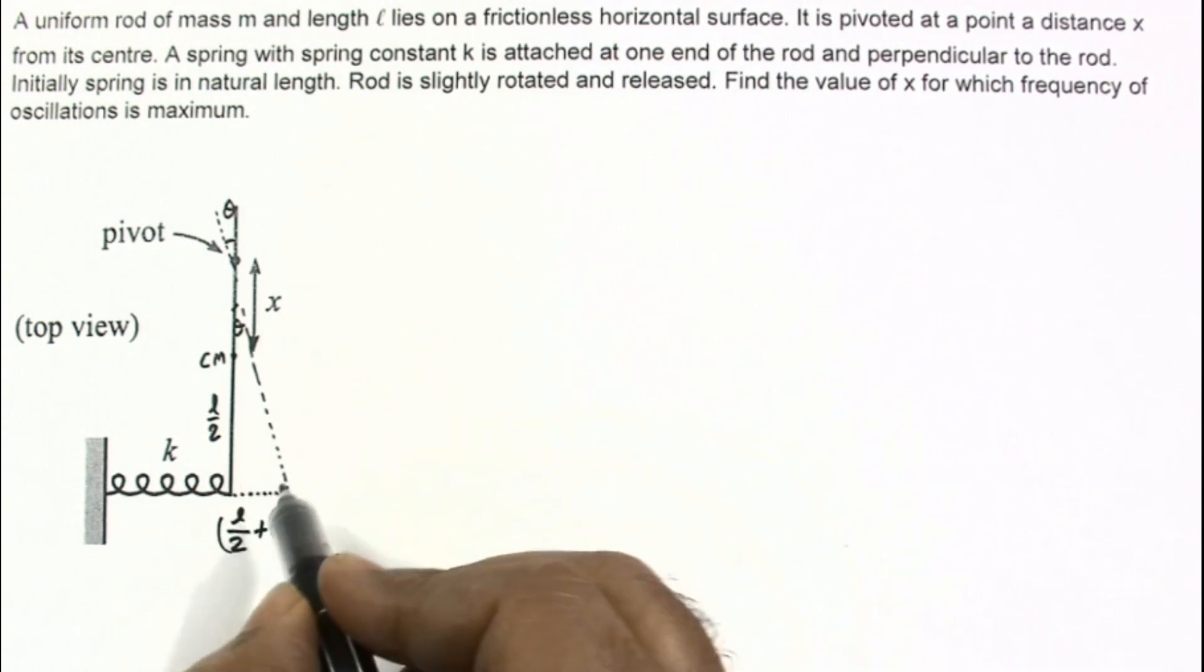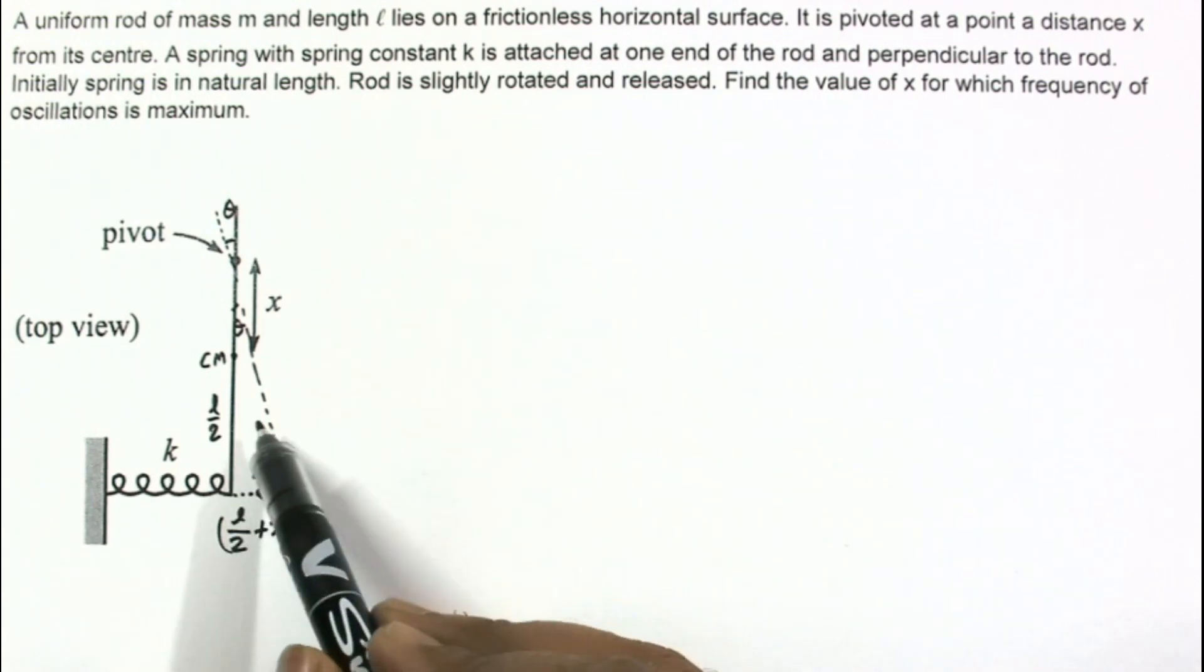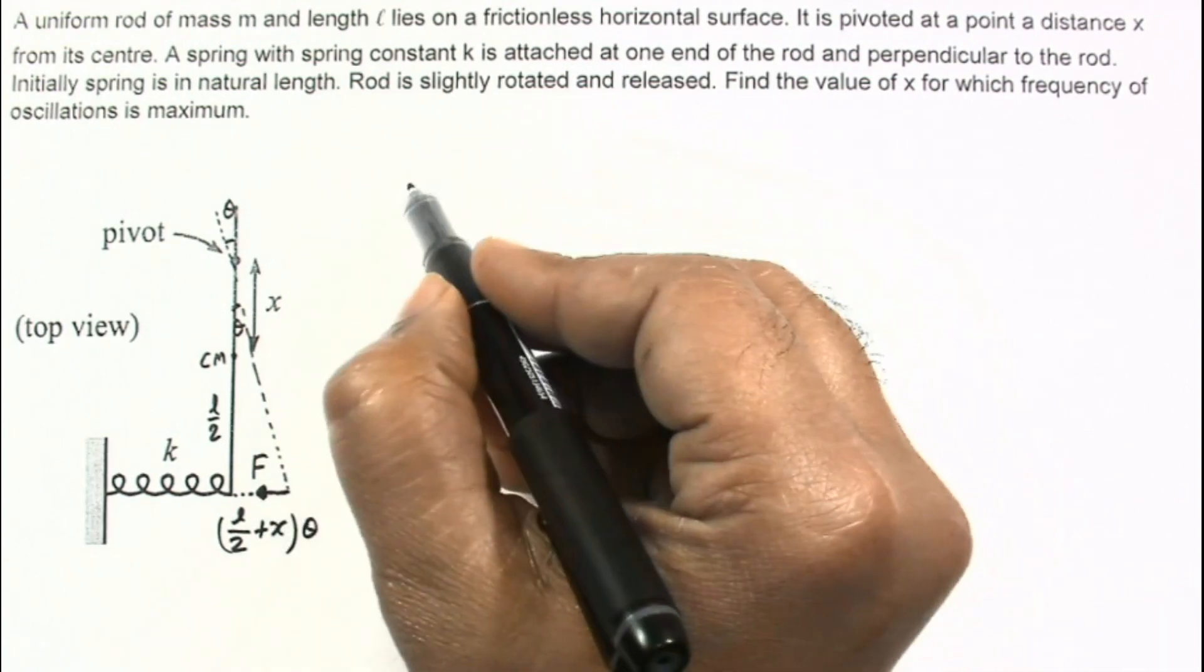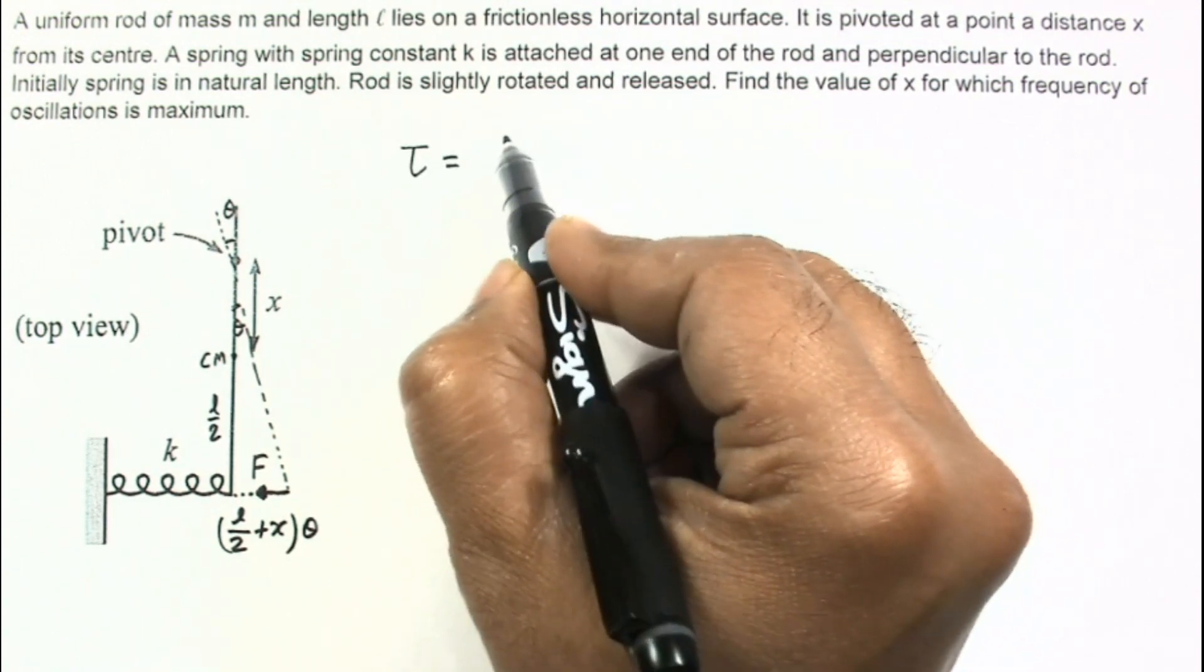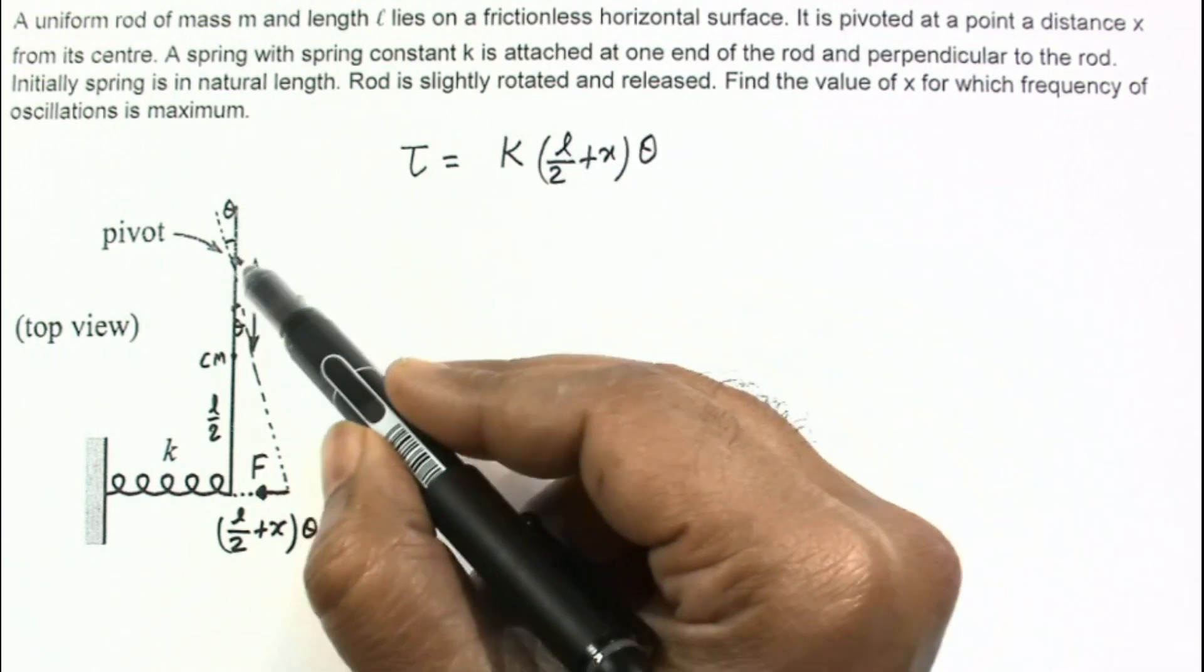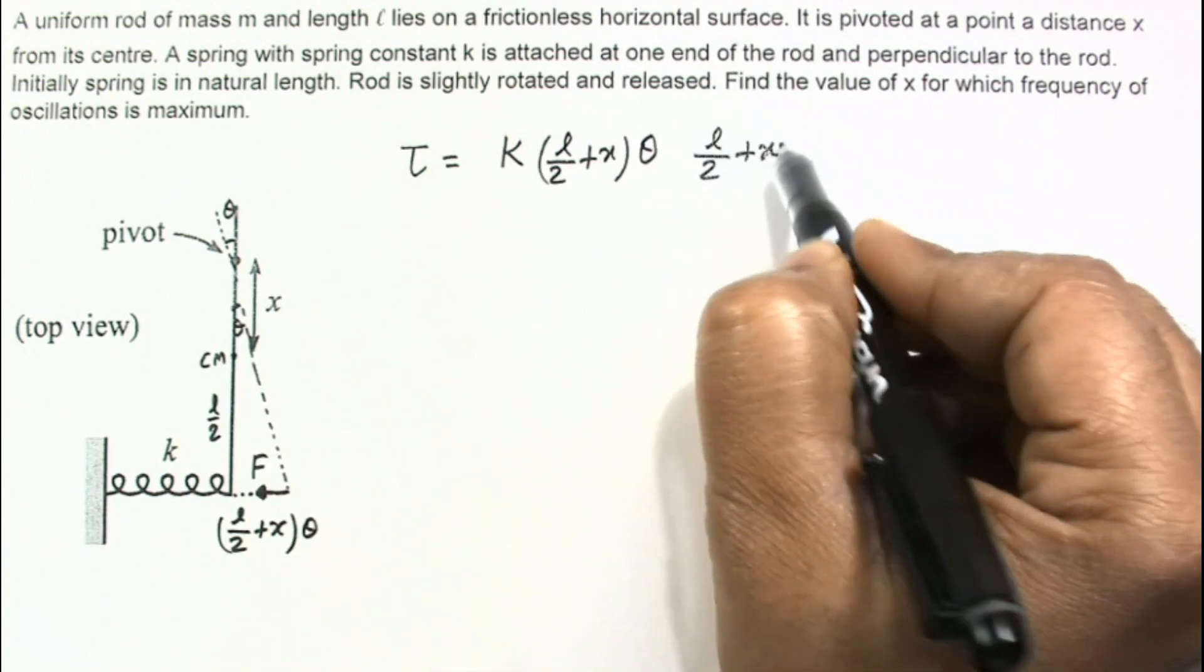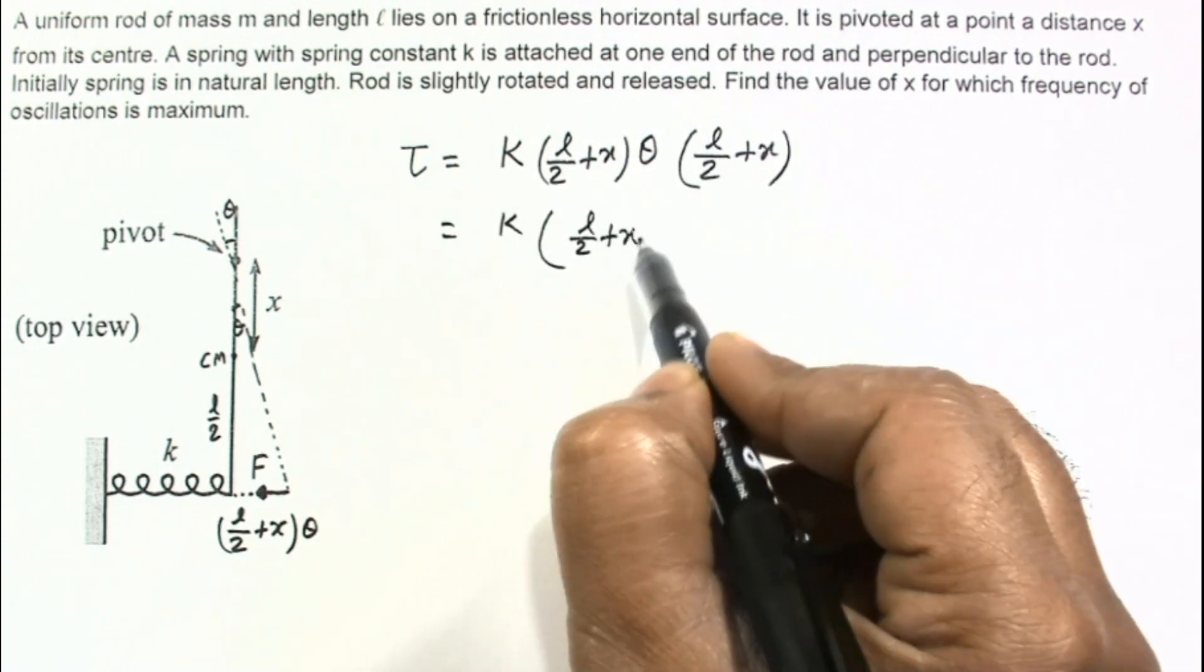So force due to spring will be like this. The spring will apply a force which will provide a torque which will bring it back towards equilibrium position. That will be a restoring torque. That restoring torque we can write: torque will be equal to this force. Force is K times this extension produced which is L by 2 plus x into theta. And for calculating torque the lever arm, this perpendicular distance will be L by 2 plus x. And this torque can be written as K times L by 2 plus x squared into theta.